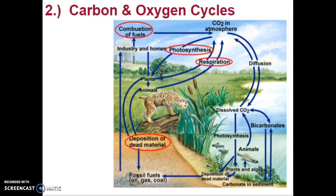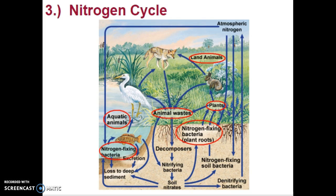Carbon and oxygen are recycled in both aquatic and terrestrial ecosystems. Photosynthesis and respiration are the main ways we exchange carbon and oxygen between the plant and animal communities. There is also an added portion to this cycle with the combustion of fossil fuels, which tends to put more carbon dioxide into the atmosphere. Additionally, because we are carbon-based life forms, when organisms die and decompose, there is a release of carbon and oxygen back into the cycle.